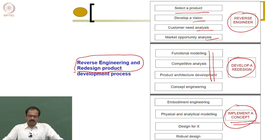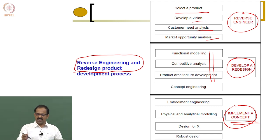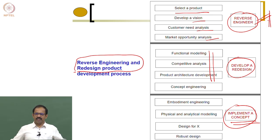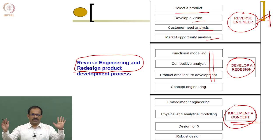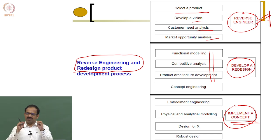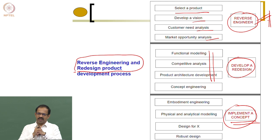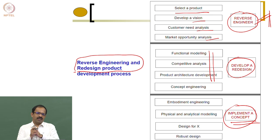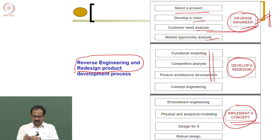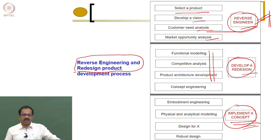In the new product development process, instead of reverse engineering you have 'develop a vision,' then 'develop a concept,' and then 'implement a concept.' In the reverse engineering and redesign process, instead of that first stage you have 'reverse engineering,' then 'develop a redesign,' and then 'implement a concept.' These are the three stages in the reverse engineering process.